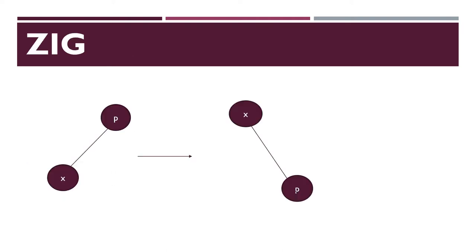Zig rotation — here is the example. There are two nodes P and X. Zig rotation is a right rotation, so these nodes are rotated towards the right side. After zig rotation, the nodes are X and P.